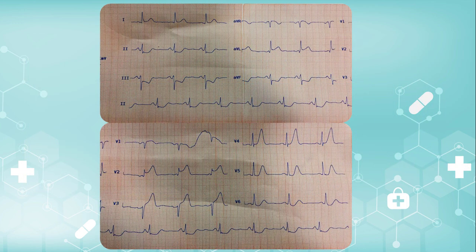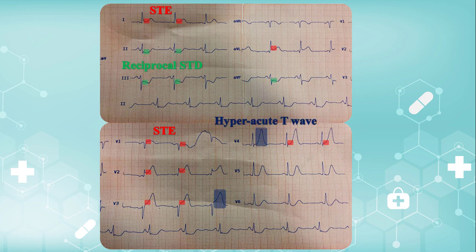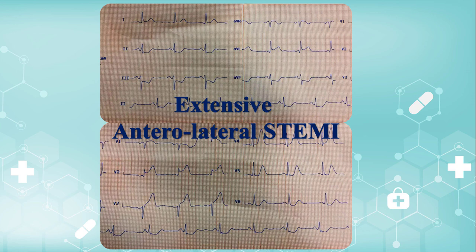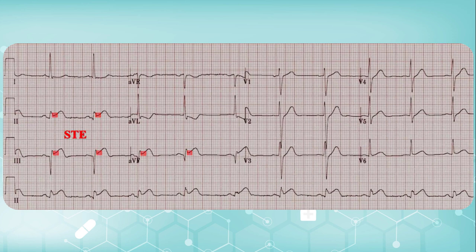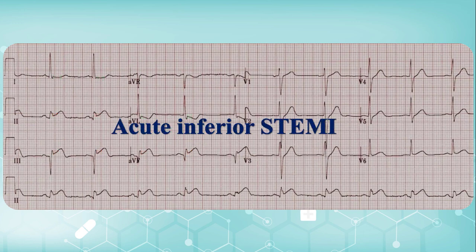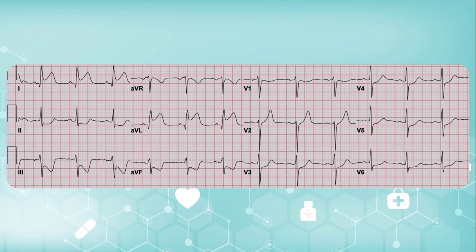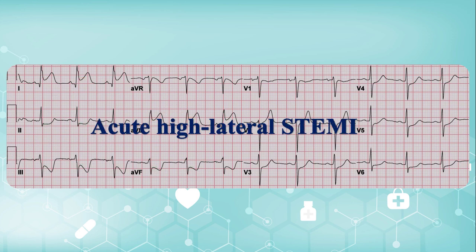Let's go through several examples. The present EKG demonstrates ST elevations in V1 to V4, D1, and AVL with reciprocal ST depressions in inferior leads. Tall T waves in V3 and V4 are present as well — so this is extensive anterolateral ST elevation MI. The next EKG demonstrates ST elevations in inferior leads with concomitant reciprocal ST depressions in D1 and AVL, establishing acute inferior ST elevation MI. The last example illustrates prominent ST elevations in D1 and AVL with reciprocal changes in inferior leads, so high lateral ST elevation MI is present.